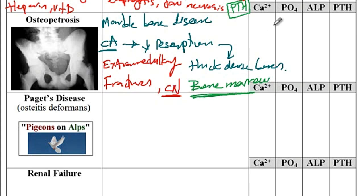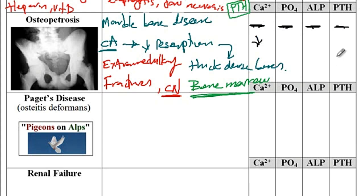In terms of lab values for osteopetrosis, everything remains normal — calcium, phosphate, alkaline phosphatase, and parathyroid hormone. However, depending on the age of the individual, there could also be a decrease in the level of calcium as well as an elevated level of alkaline phosphatase. So calcium and ALP could be variable: from normal to decreased for calcium, and from normal to increased for ALP.